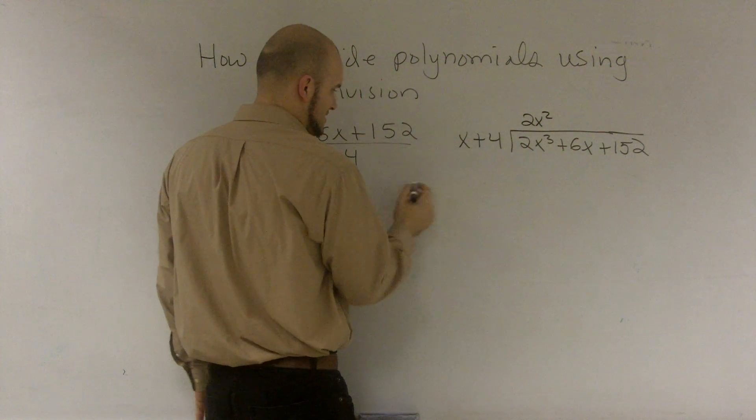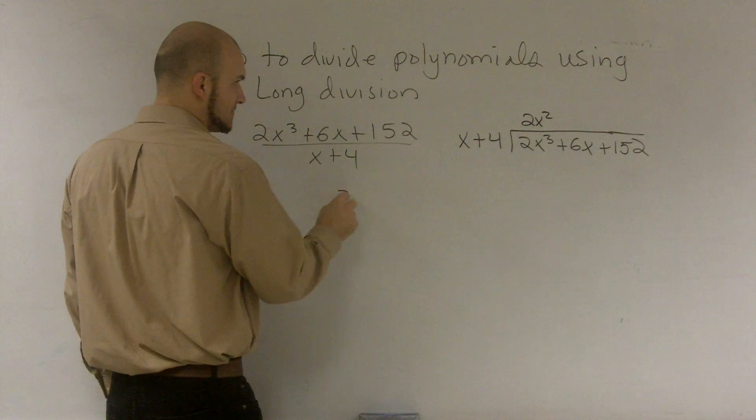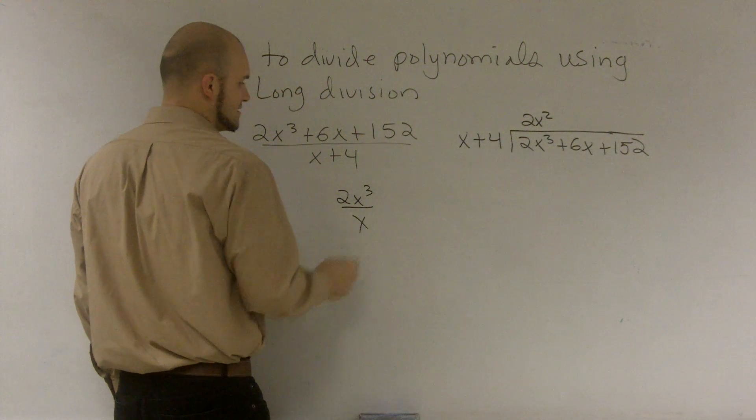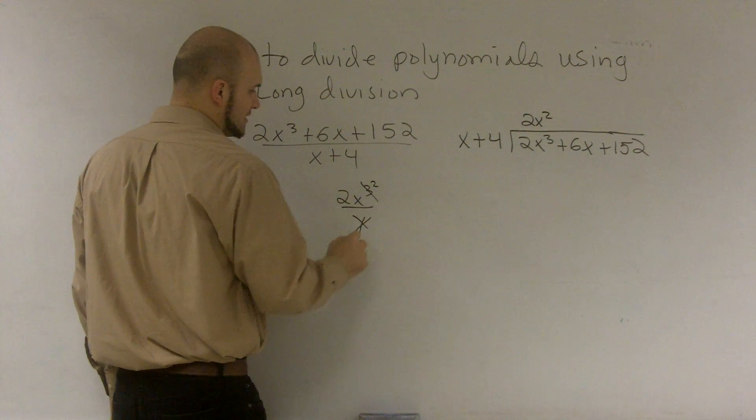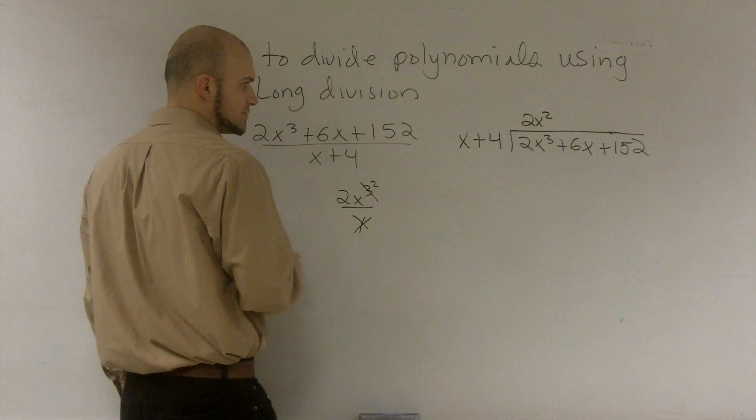And the other way you can kind of look at this is just kind of do a side division of it. 2x cubed divided by x, well, that's going to be 2. That's going to cancel out. You're going to be left with 2x squared.